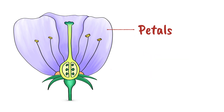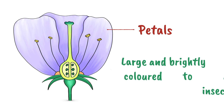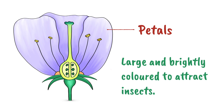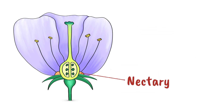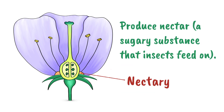Let's start with the petals. These are large and often brightly colored to attract insects. Flowers often have nectaries in them. As the name suggests, these produce nectar, a sugary substance that insects feed on. This provides a good incentive for insects to visit the flower.